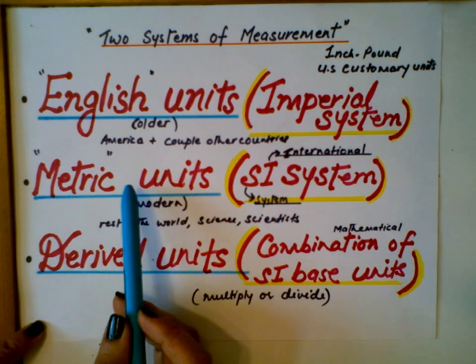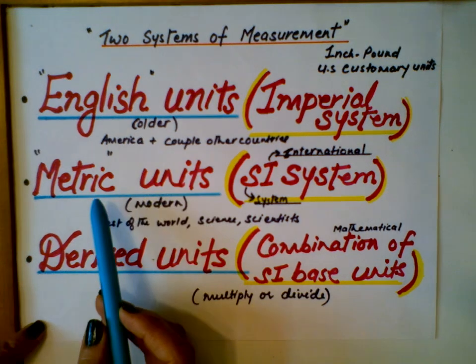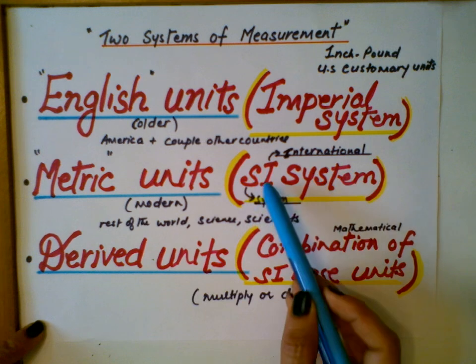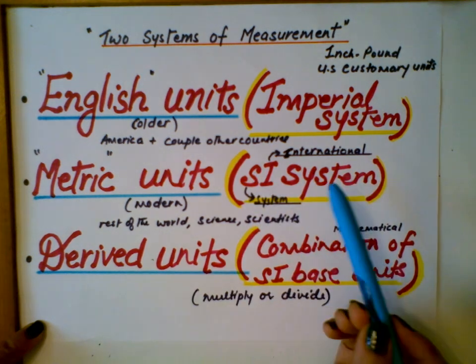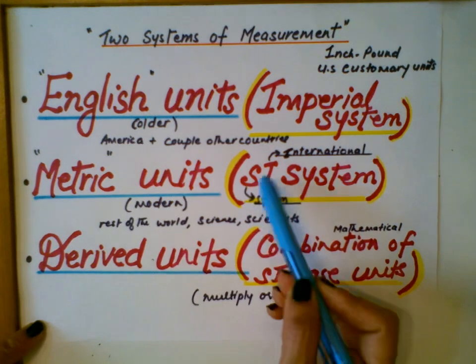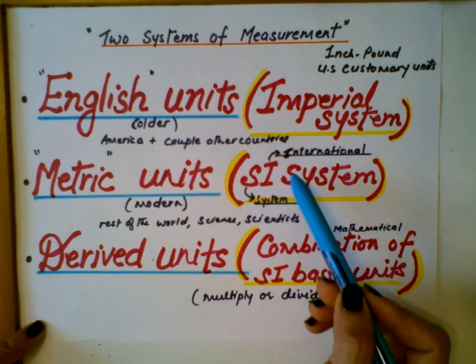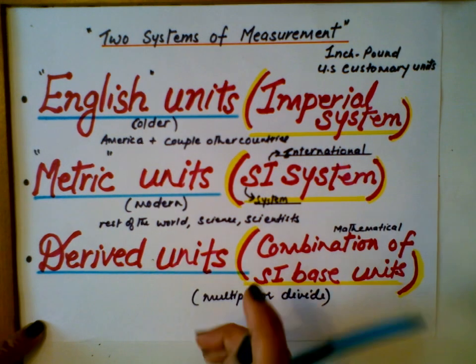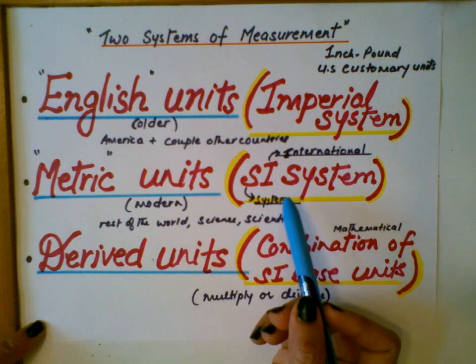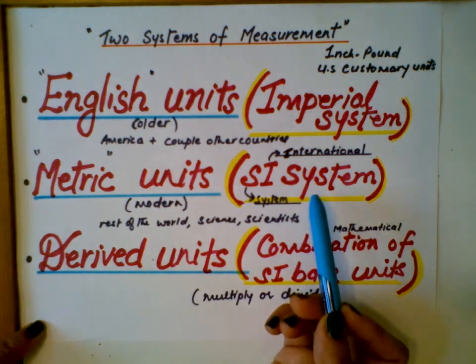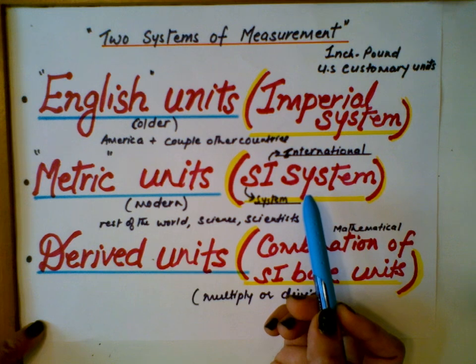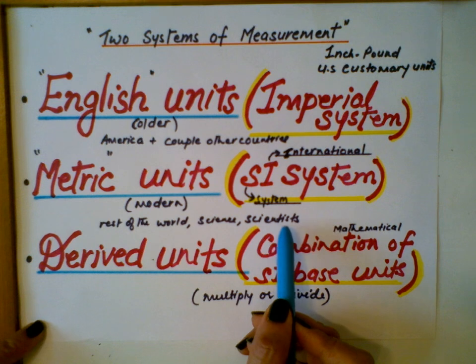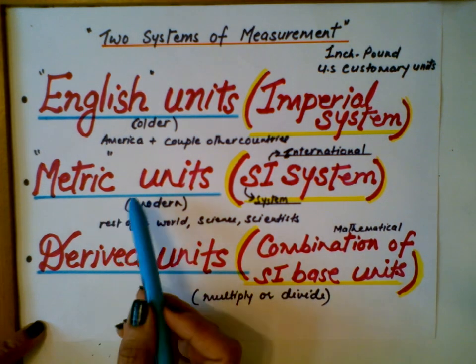The metric units, or metric system of measurement, has another name: SI system, or SI units. The full form for this abbreviation SI: S stands for system, and I is for international. This is called system international, or SI system of units, because it is internationally agreed upon and used by scientists across the world. The rest of the world uses the metric system.